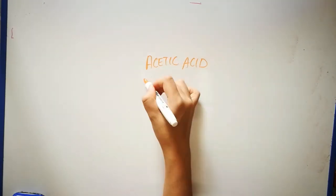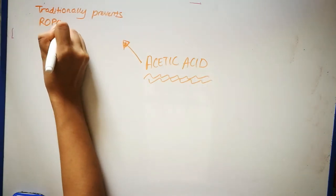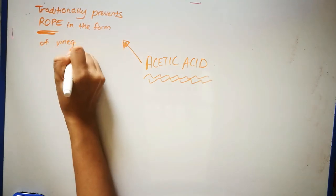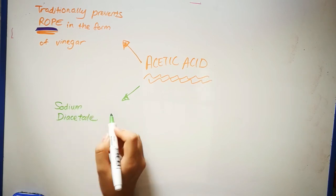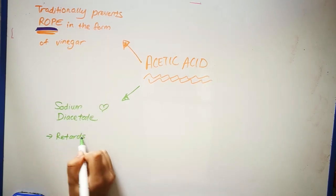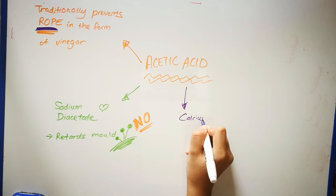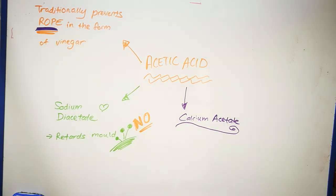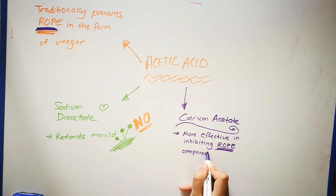Next up, acetic acid, which is used traditionally to prevent rope in the form of vinegar. One example is sodium diacetate, which retards mold growth on bakery products. Another example is calcium acetate, which is more effective in inhibiting rope compared to calcium propionate.